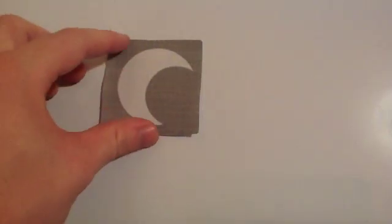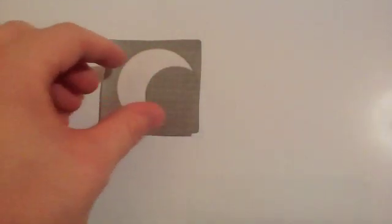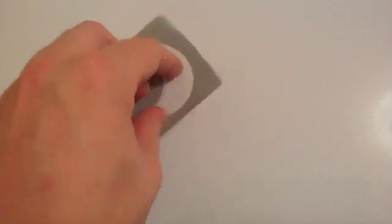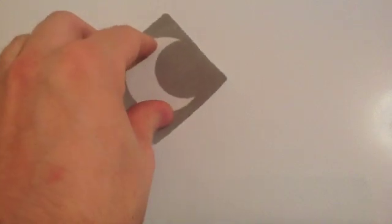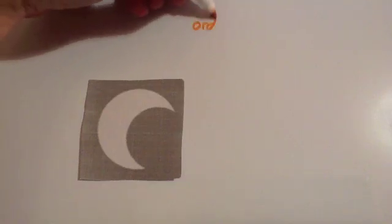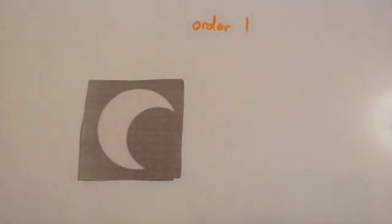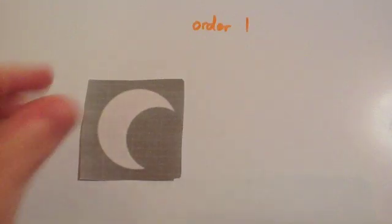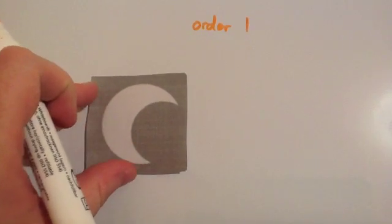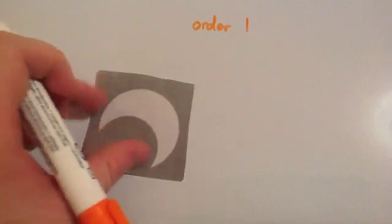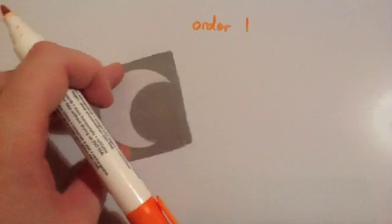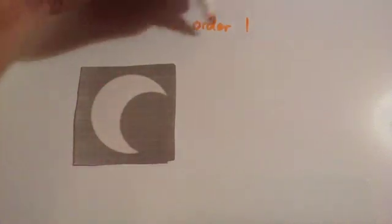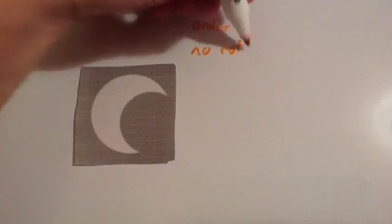Let's look at the rotational symmetry of this square with a crescent moon inside. As you turn it through 360 degrees, it doesn't have any position the same until you get back to the starting position. So this has got order of rotational symmetry of one. However, when you look at the definition of rotational symmetry, to have rotational symmetry it has to have a position the same as you turn it through some amount. So this shape, even though it has order one, has got no rotational symmetry.